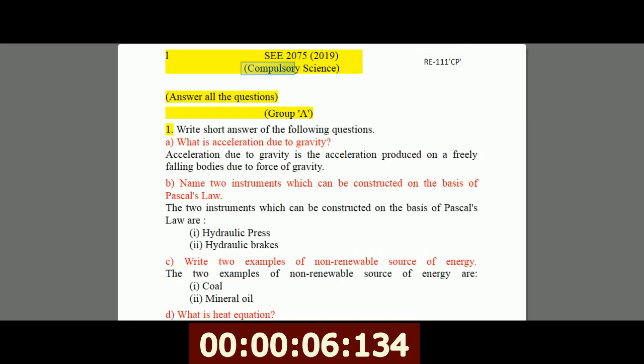NEE 2075, 2019, compulsory science. Answer all the questions. Group A. 1. Write short answer of the following questions. A, what is acceleration due to gravity? Acceleration due to gravity is the acceleration produced on a freely falling body due to force of gravity.